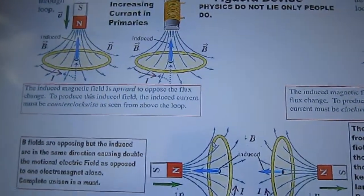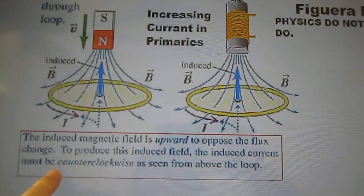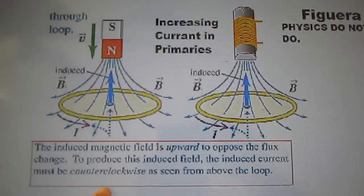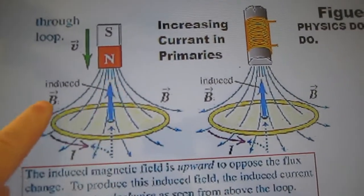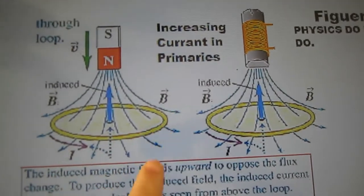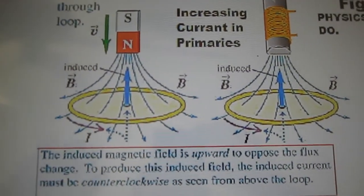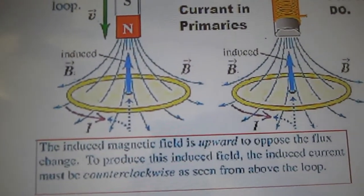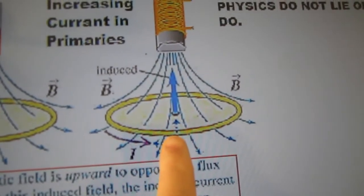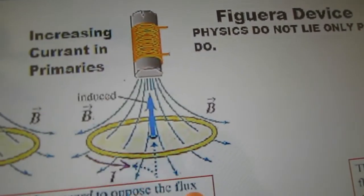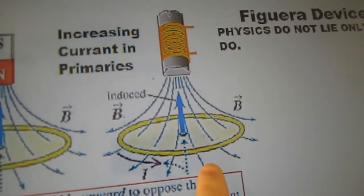The induced magnetic field is upward to oppose the flux change. To produce this induced field, the induced current must be counterclockwise as seen from above the loop looking down. Here's the magnet coming in — the current rotation is counterclockwise from right to left when looking from above, but it's actually clockwise when looking at the end of it. This is exactly the same thing as the current increasing in the primary.